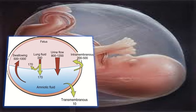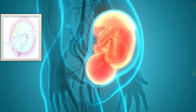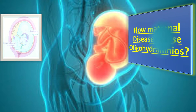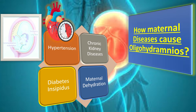Now we will explain how maternal diseases cause oligohydramnios. First of all, hypertension. Maternal hypertension causes uteroplacental insufficiency and poor perfusion of water and solutes through the amniotic fluid and chorion, and the fetus has diminished urine output resulting in a decreased amount of liquor. This is how oligohydramnios takes place in hypertension.